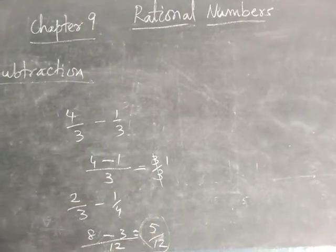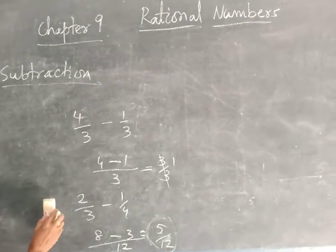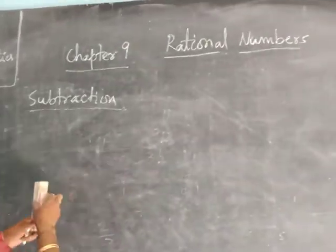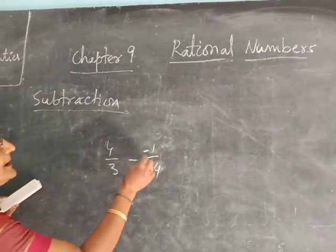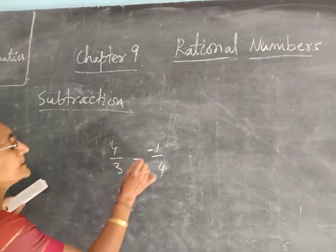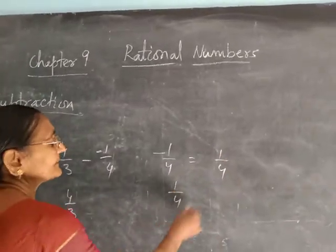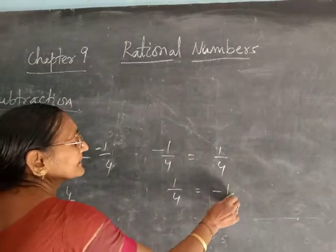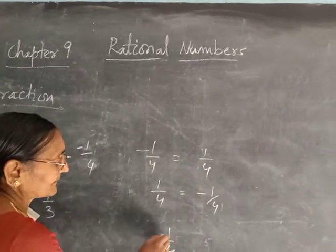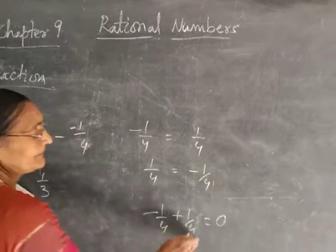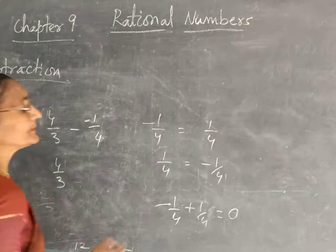When it is a proper fraction, it cannot be changed. If it is an improper fraction, you have to change it into a mixed fraction. Now, suppose the question is 4 by 3 minus minus 1 by 3. Then you have to write the additive inverse. The additive inverse of minus 1 by 4 is plus 1 by 4. The additive inverse of 1 by 4 is minus 1 by 4. If you add two additive inverses, you get 0.